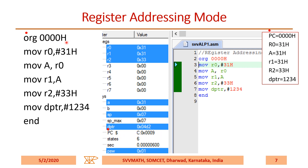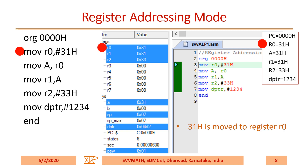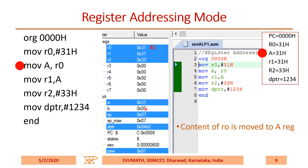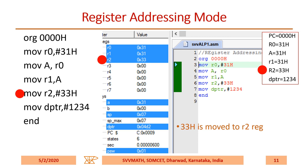Whenever ORG 000H is executed, PC becomes 0. But now you are observing a different PC value because the whole program is already executed, so the last END instruction address is in the program counter. MOV R0, #31H — 31H is copied to R0. MOV A, R0 — the content of R0 is moved to the accumulator. MOV R1, A — the content of A is moved to R1. MOV R2, #33H — 33H will be copied to the R2 register.